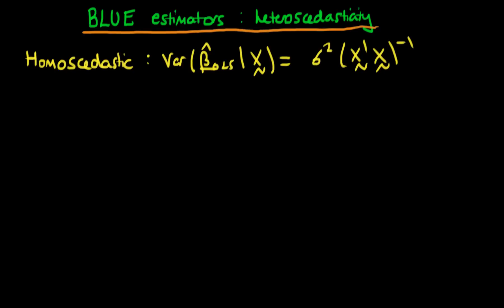In this video we're going to continue our discussion as to how we can derive BLUE estimators in the presence of heteroscedasticity by deriving the variance of OLS estimators in the presence of heteroscedasticity. Remember in the last video we derived the variance of OLS estimators in the presence of homoscedastic errors and found it was equal to σ²(X'X)⁻¹.